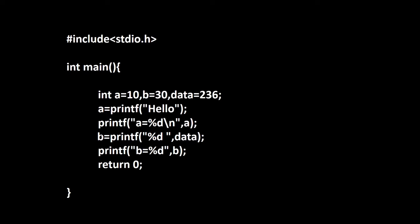So let's start. We have this question: 'a' is given as 10, 'b' is initialized with 30, and there is a third variable 'data' which is initialized with 236. Then we have some printf statements which are printing some messages or values of those variables. You have to check what is the output of this program — you can pause the video and check.